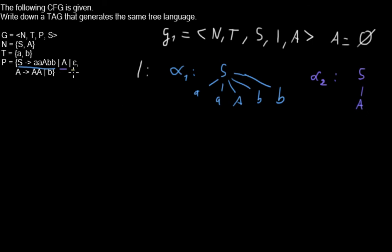Then we have this rule. Let's make a new alpha 3 tree with S as root node and where epsilon is the only child node.